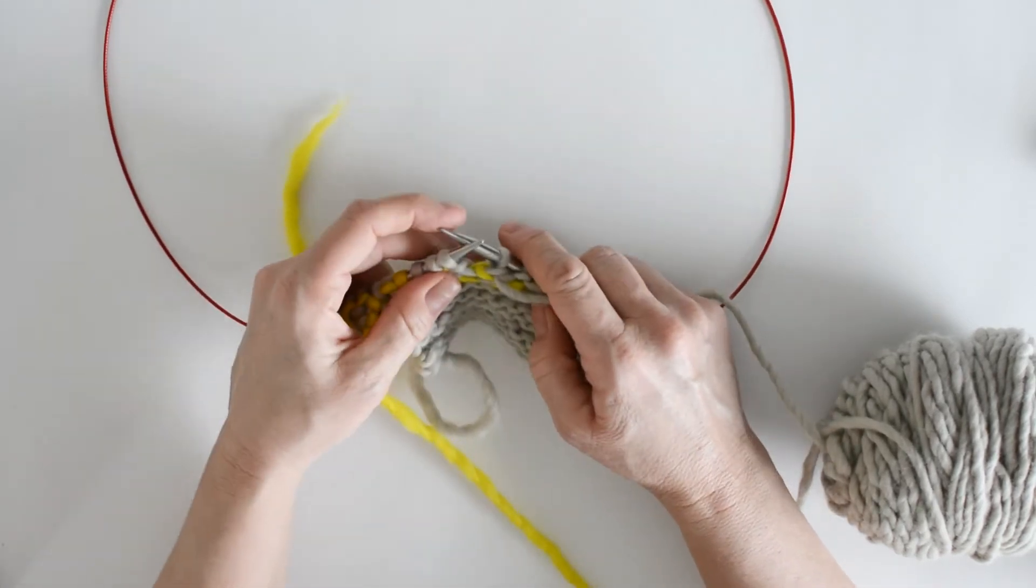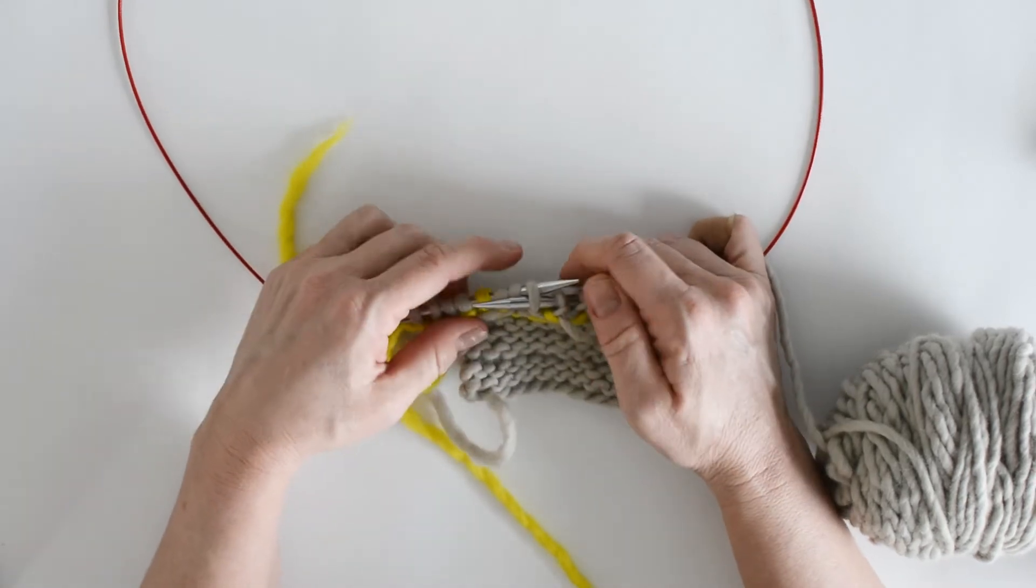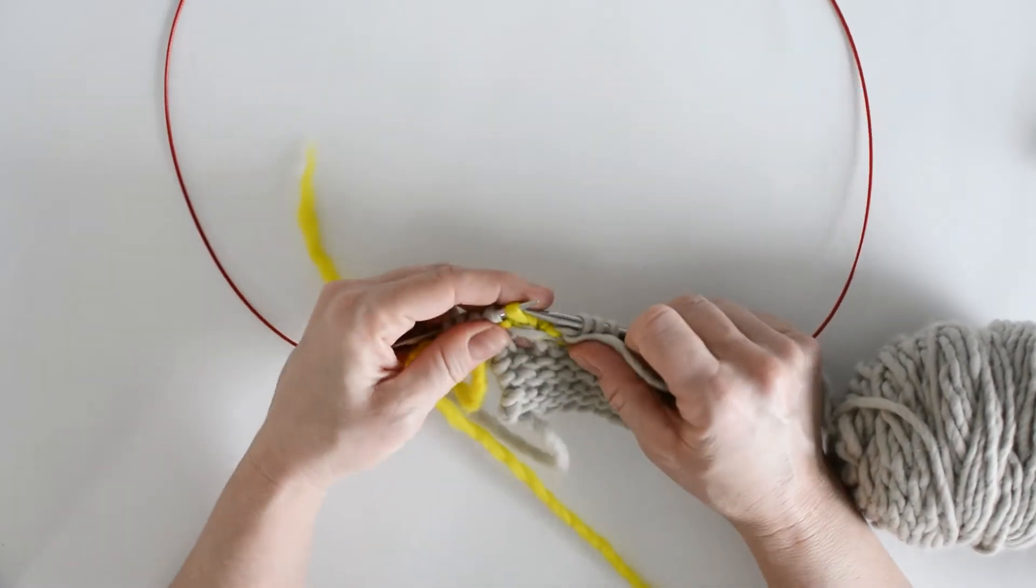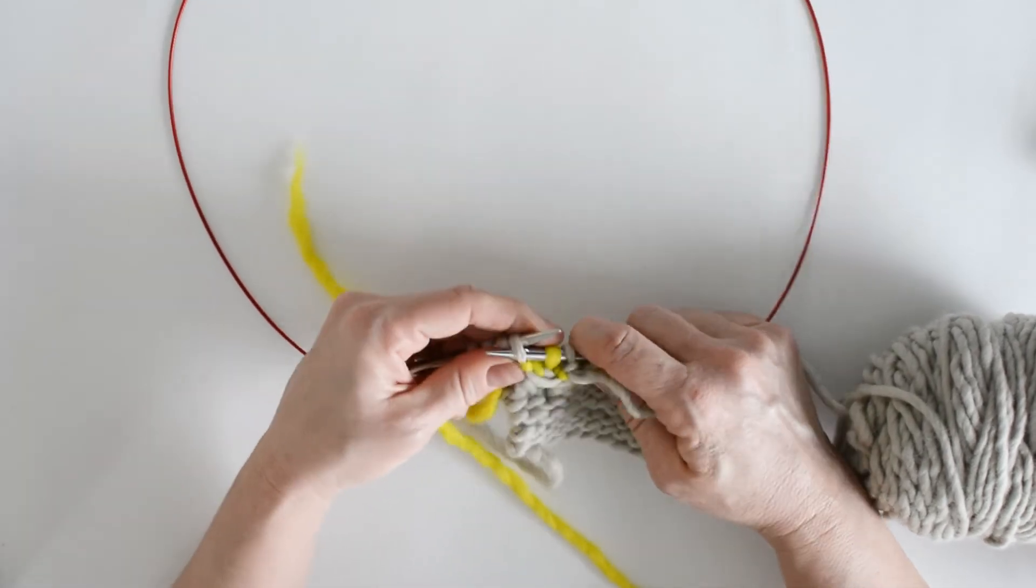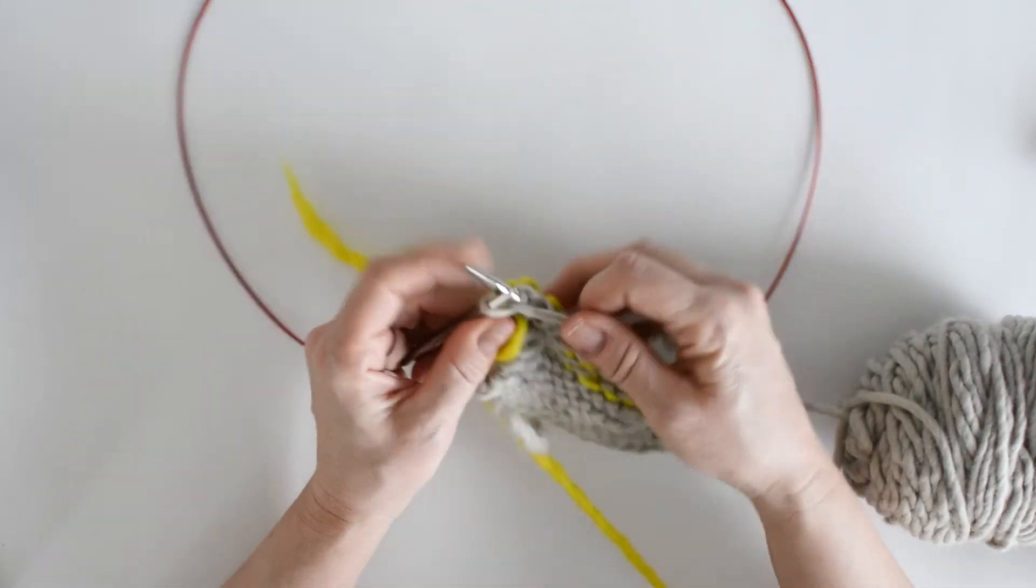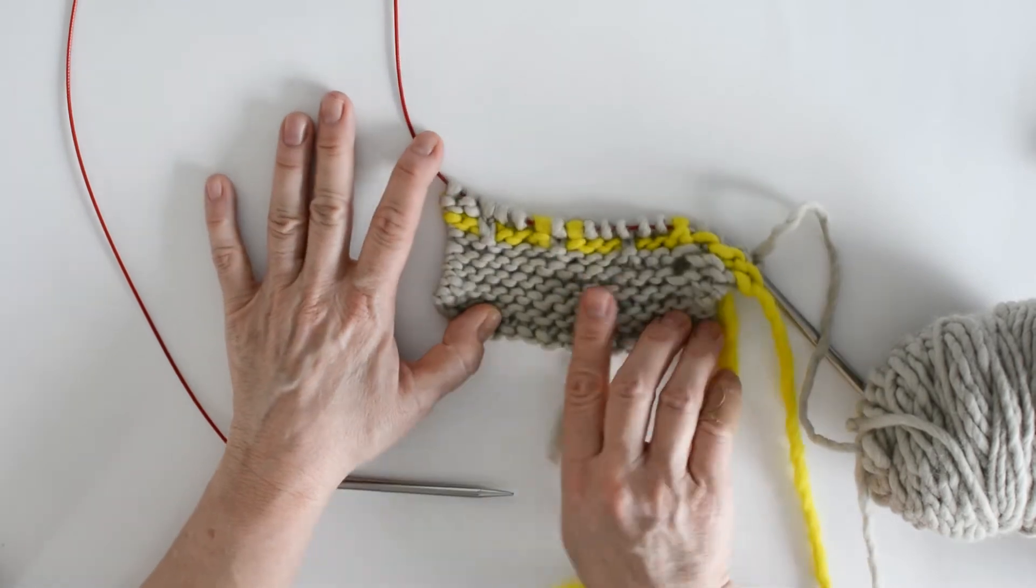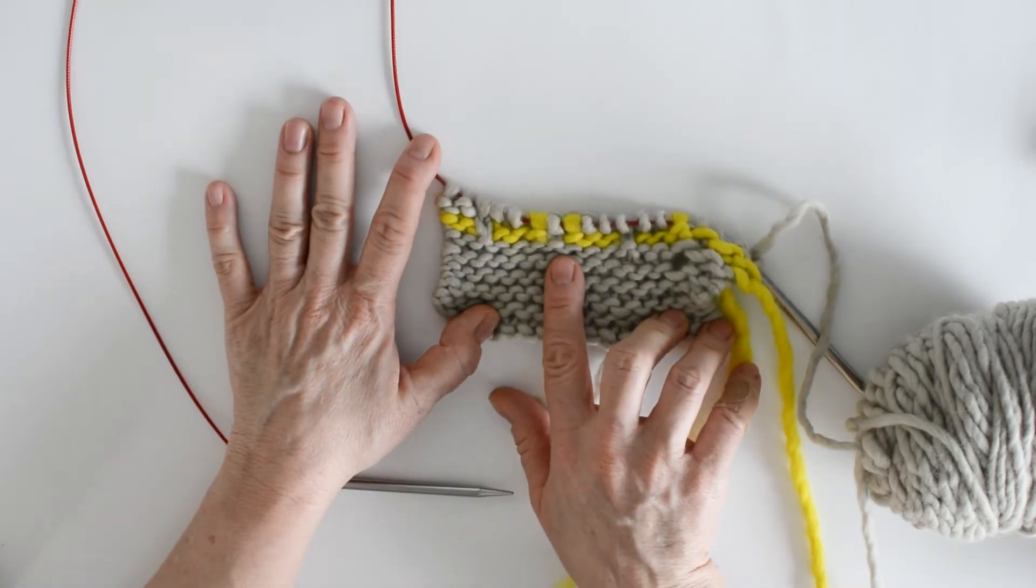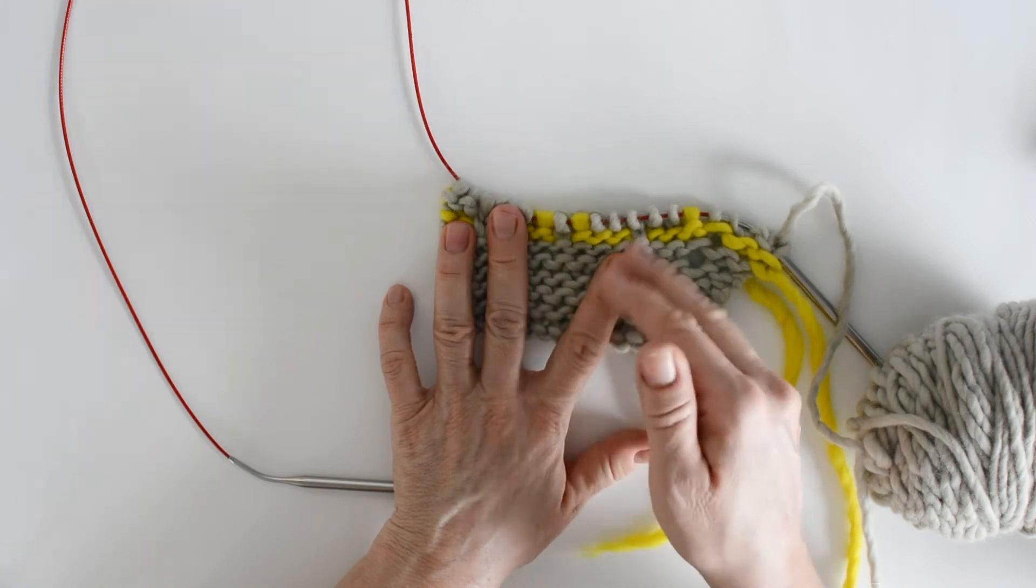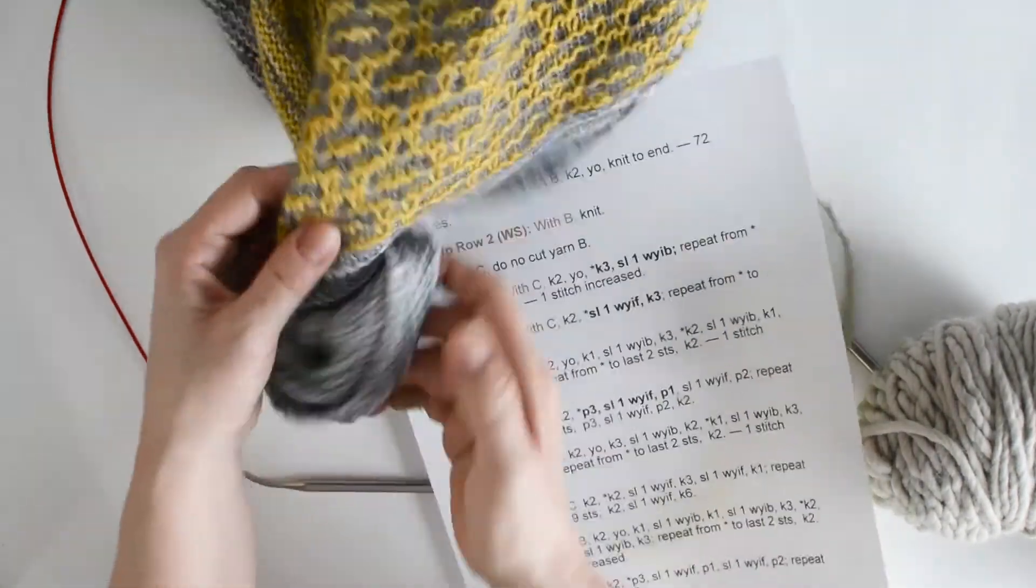And we'll keep repeating that sequence again until we get to the last, what does it say, 8 stitches. So actually, with my small swatch here, we are at those last 8 stitches. So it tells us to purl 3. We're going to slip 1 with the yarn in front, purl 2, and knit 2. Now, let's take a look at our right side. And we can see, again, just as we had done with the yellow yarn and we brought that gray yarn up from two rows below, now we have used our gray yarn and we've brought the yellow yarn up from the row below. And that is creating our mosaic pattern.